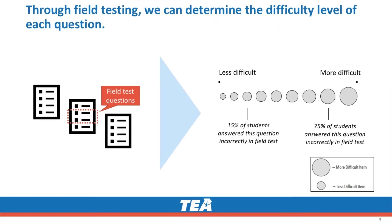Through field testing, we can determine the difficulty level of each question. If 15% of students answer the field test question incorrectly, we know it's an easier question. If 75% of students answered the field test question incorrectly, we know it's a harder question.